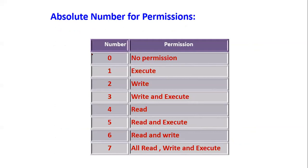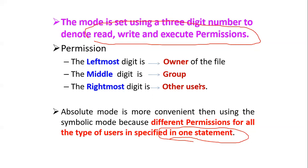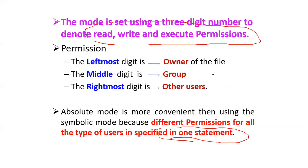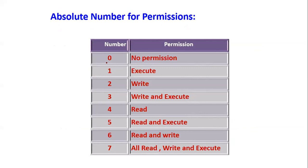Now the screen is visible. In absolute mode, permissions are represented using numbers: read is 4, write is 2, execute is 1. So: 0 means no permission, 1 means execute, 2 means write, 3 means write and execute, 4 means read, 5 means read and execute, 6 means read and write, and 7 means all permissions.